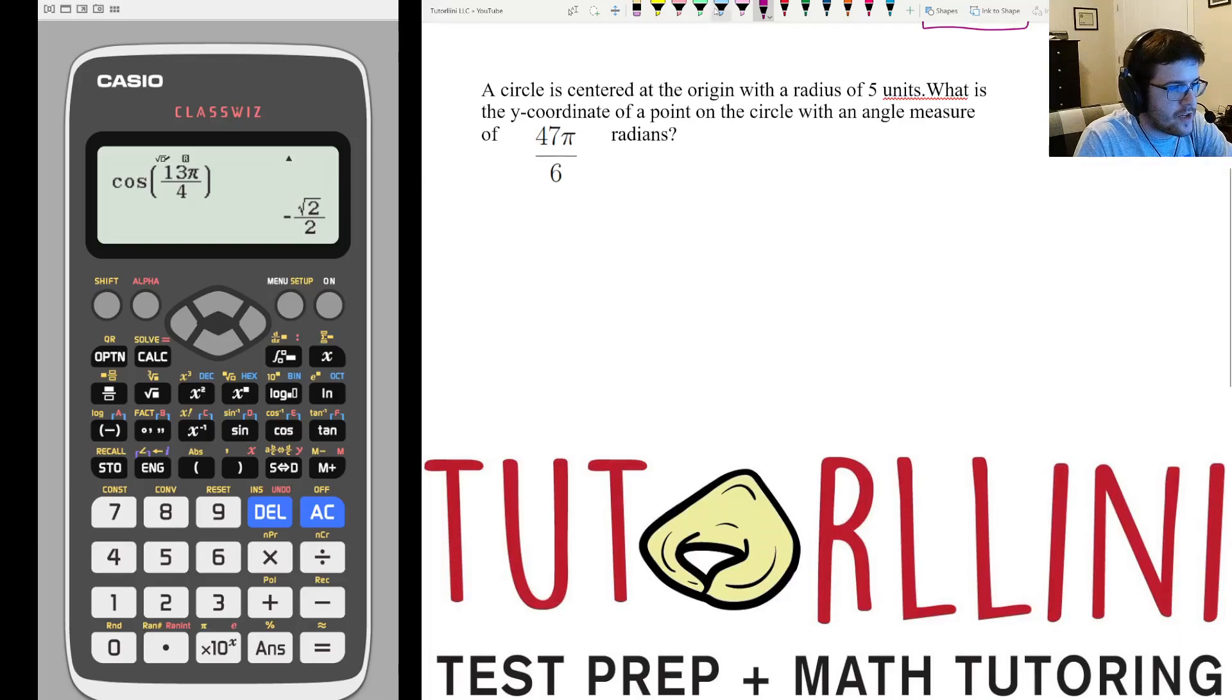Circle is centered at the origin. Okay, but this time it has a radius of 5 units. And we want to find the y coordinate. Okay, so we're going to use the equation y equals r sine theta. We're going to put 5 sine of our theta, which is our angle, 47 pi over 6.